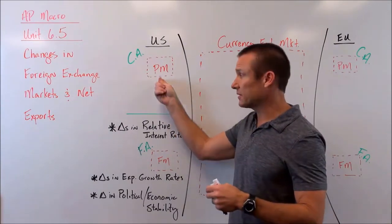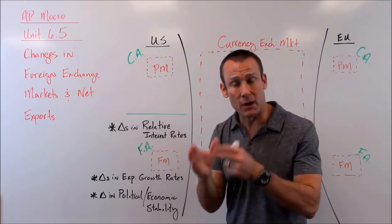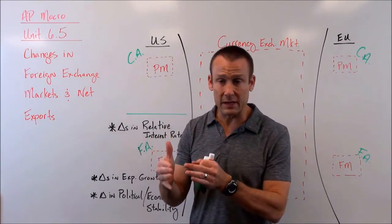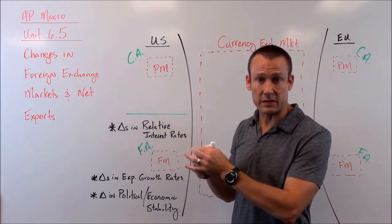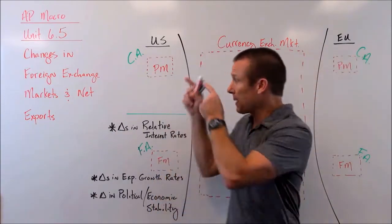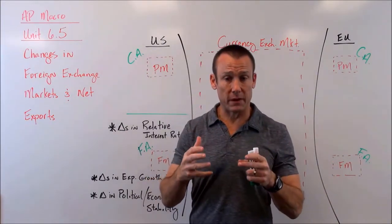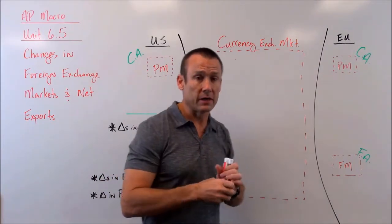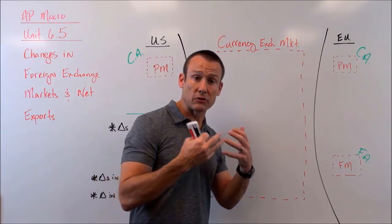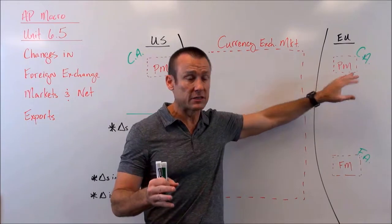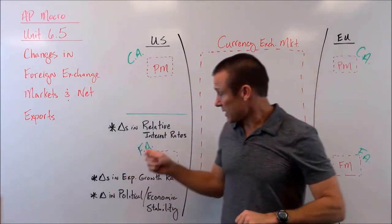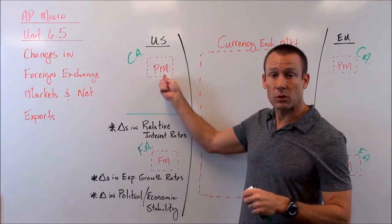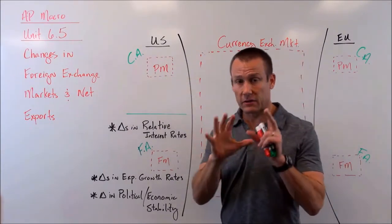When the dollar appreciates, goods and services inside the US product market become more expensive to the rest of the world, since they're priced in dollars. If the dollar appreciates relative to other currencies, it's now more expensive to get those goods and services, so people internationally buy less. On the upside for Americans, when the dollar appreciates, the international purchasing power of the dollar goes up - foreign currencies become cheaper to get, making imports cheaper. So: interest rates go up → dollar appreciates → US net exports go down.